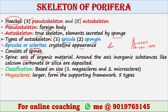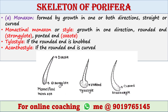Based on size, spicules are of two types: megascleres and microscleres. Megascleres are larger spicules that form the supporting framework, and they are of five types. The first type is monaxon. This type of spicule is formed by growth in one or both directions.